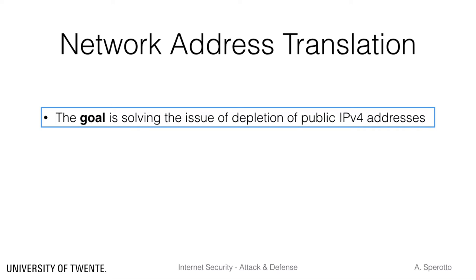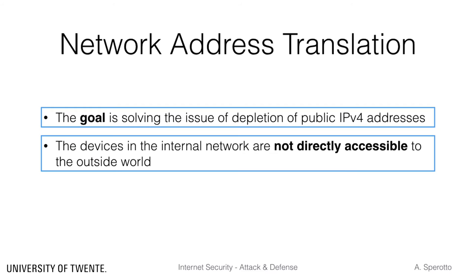The main goal of NAT nowadays is solving, or at least slowing, the depletion of the public IPv4 address space. Therefore, it is important to understand that NAT is not a security mechanism per se. However, and this is the reason we treat NAT in this course, it indirectly provides a security layer by isolating the hosts in the internal network from the external network. We will see more on the security implications of NAT later in this lecture.